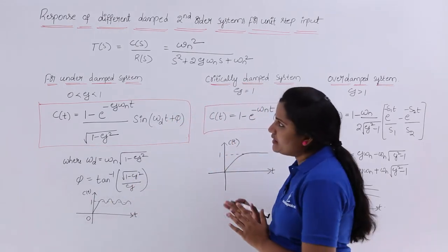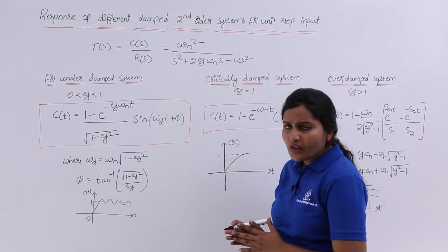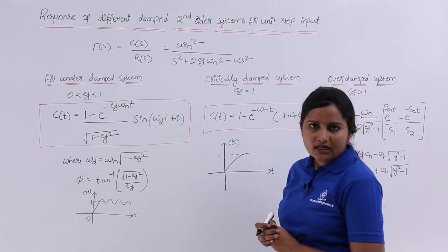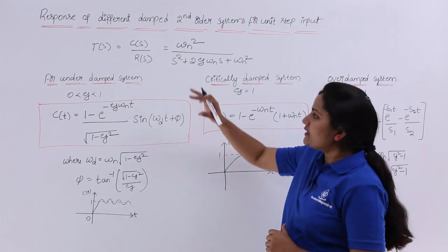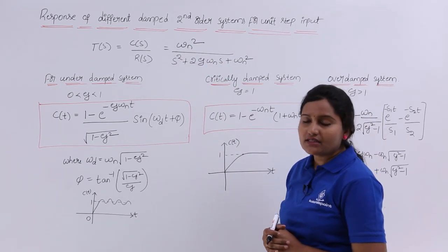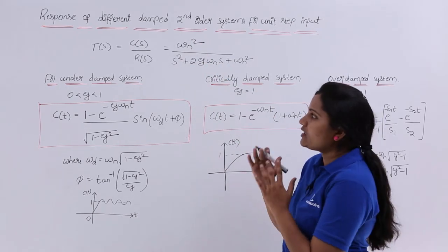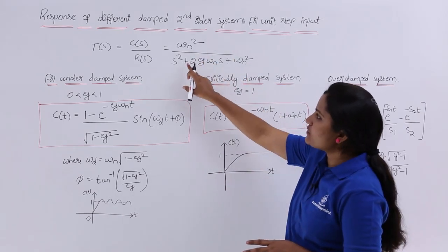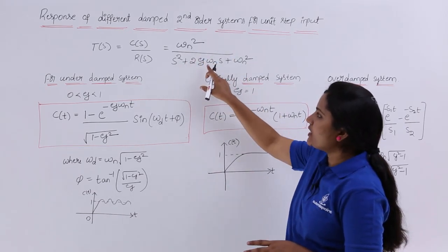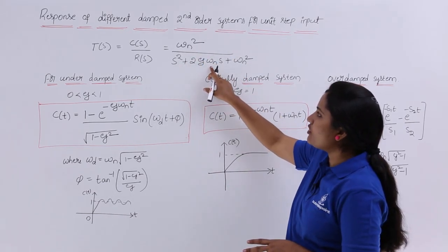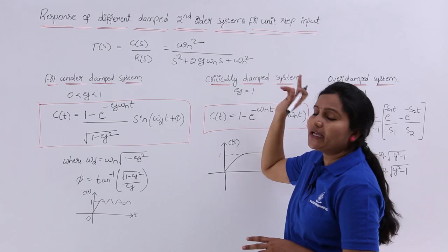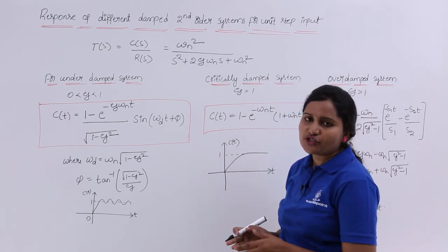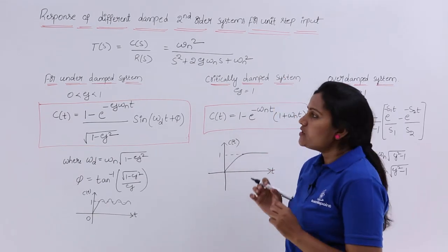When you are taking any response of a second order system, the basic transfer function of the second order system is omega_n squared divided by s squared plus 2*zeta*omega_n*s plus omega_n squared. This is the transfer function of the second order system.